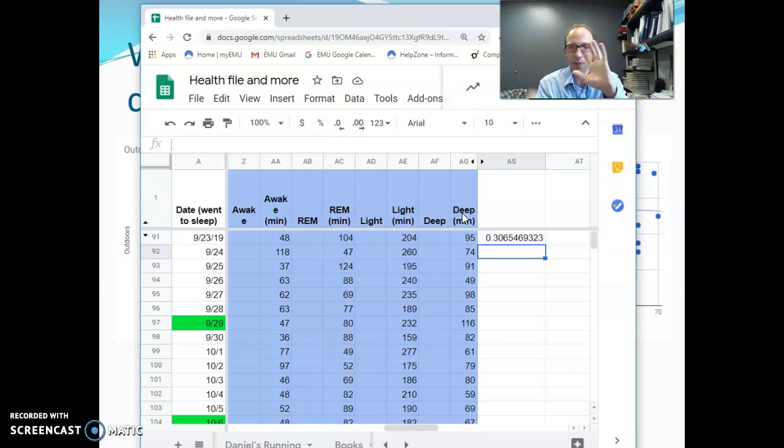Again, when you flip the variables, flip which is X and which is Y, the correlation coefficient will stay the same. The equation of the actual trend line will be different. But the correlation coefficient, R, will stay the same.